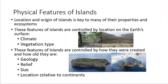The physical features of islands — the location and the origin — are key to many of their properties and ecosystems. First, the location of an island: climate and vegetation type are controlled by the location on the Earth's surface. So the type of climate you get on your island is very much dependent on where that island is on the Earth's surface.